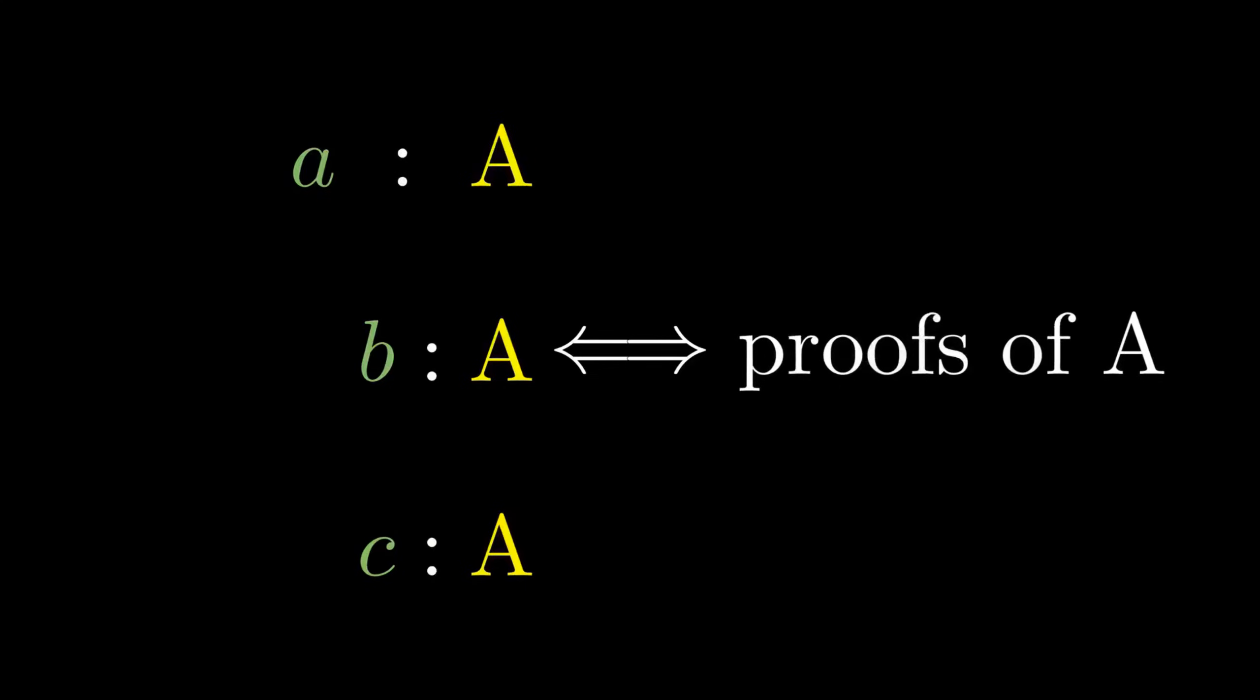Remember when I said set theory is built onto logic? Well, that's not the case for type theory. Type theory handles logical propositions by itself, using a very outstanding correspondence. Types can be seen as logical propositions, and an inhabitant of this type can be seen as a proof of the proposition. If the type has several inhabitants, that means there are several proofs of the proposition.